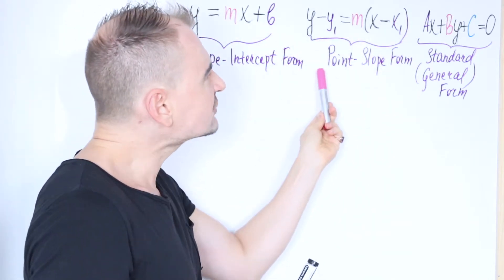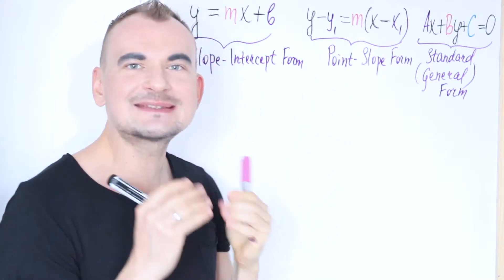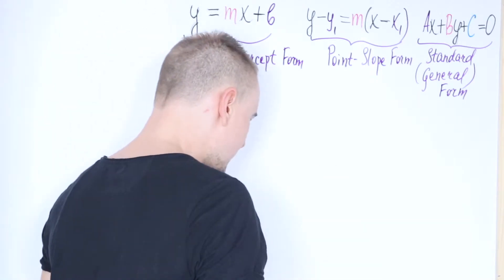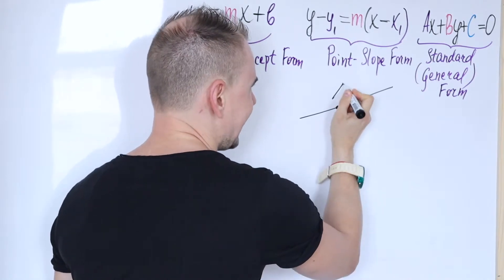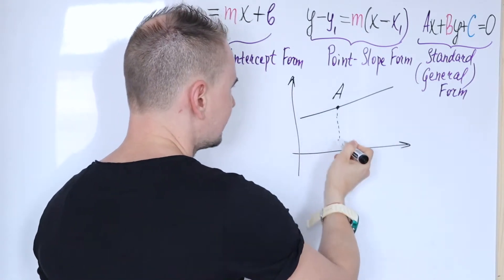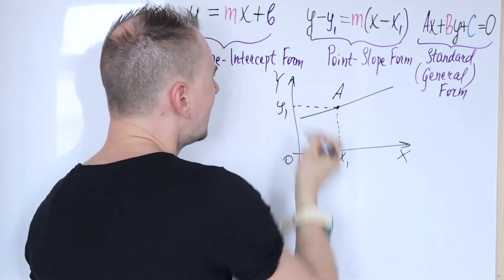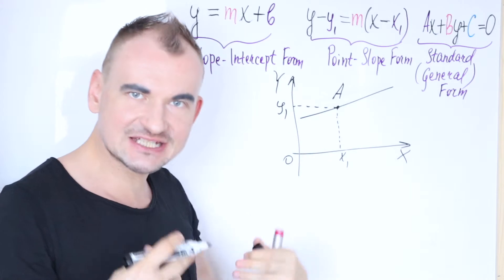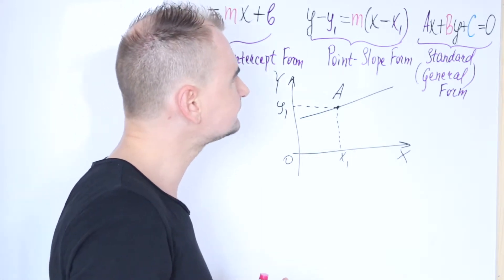Now, point-slope form is kind of similar to slope-intercept form. The difference is x1 and y1, it's the coordinate of a point lying on a straight line. So if it comes to geometrical interpretation, it means if you have a straight line, this point, let's say a, which has coordinates, alright I will draw a full picture, x1 and y1, right? So this point belongs to this straight line. So this m still represents, still indicates the slope, the gradient.